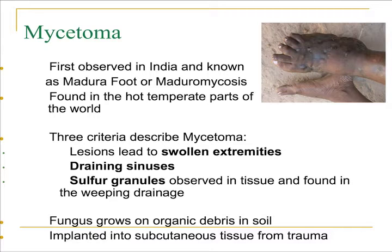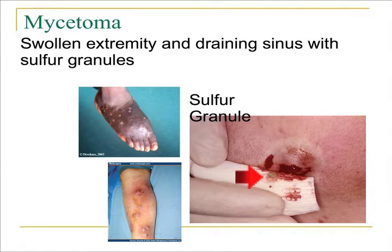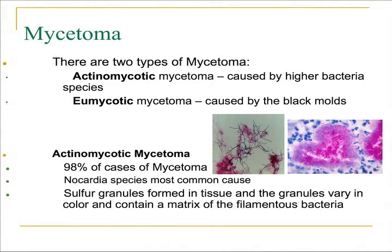There are two types of mycetoma: the actinomycotic and the eumycotic. Actinomycotic mycetoma is caused by higher bacteria, not by true fungal organisms. Because the diseases are just like the fungal forms, most laboratories deal with these organisms in the mycology area. The eumycotic mycetoma is caused by the black molds. Actinomycotic mycetoma accounts for about 98% of all cases. Of all the species capable of causing mycetoma, Nocardia is by far the most common gram-positive higher bacteria causing actinomycotic mycetoma. Sulfur granules in tissue vary in color and contain a matrix of filamentous bacteria.